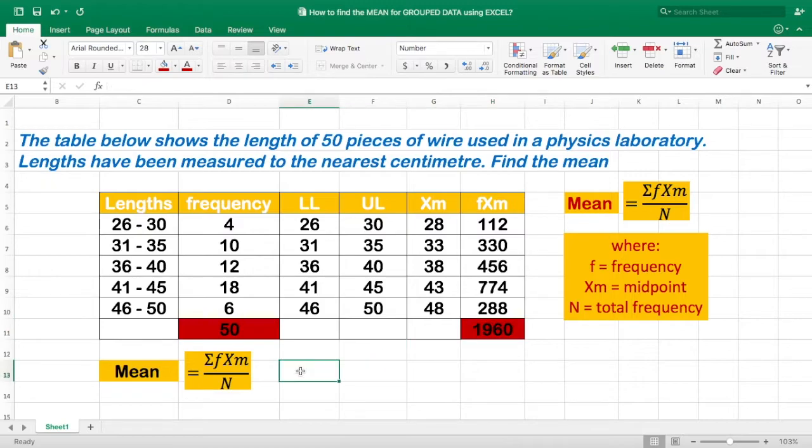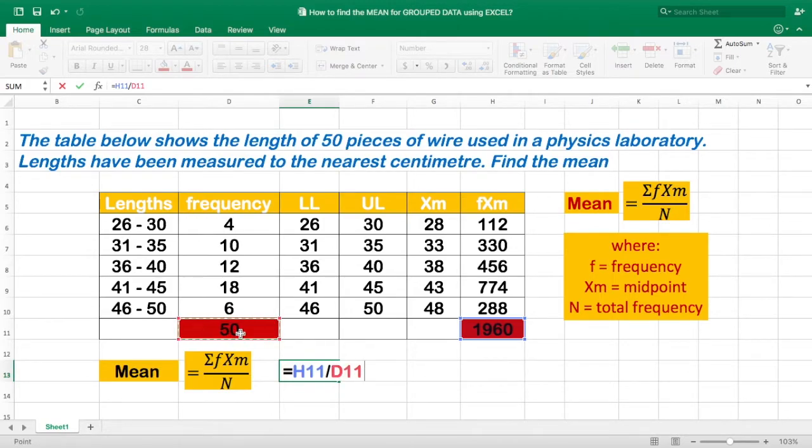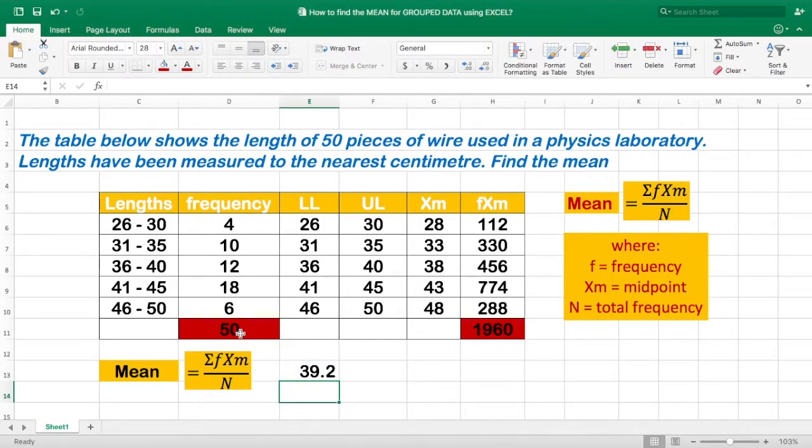And we are now ready to plug in the values in the formula. So since this is division, this is equal to, fxm divided by the total frequency or n, and enter. And we got 39.2.